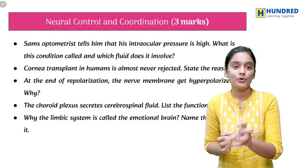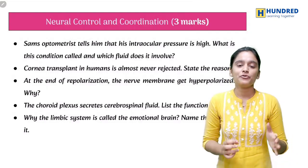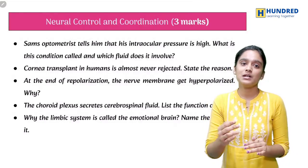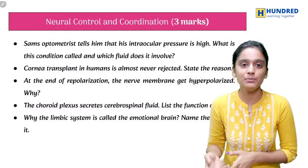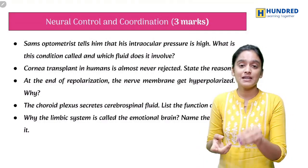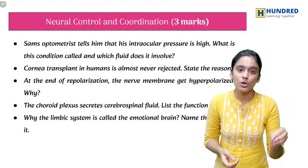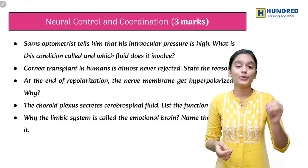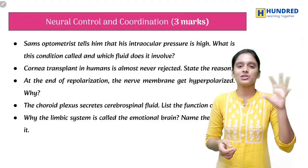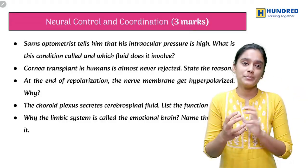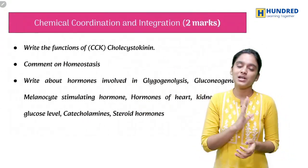For 3 marks in Neural Control, there are 5 questions. For example: Sam's optometrist tells him that his intraocular pressure is high — what is this condition called and which fluid does it involve? These case-based questions will be asked. Learn this chapter well, as it has very important content.